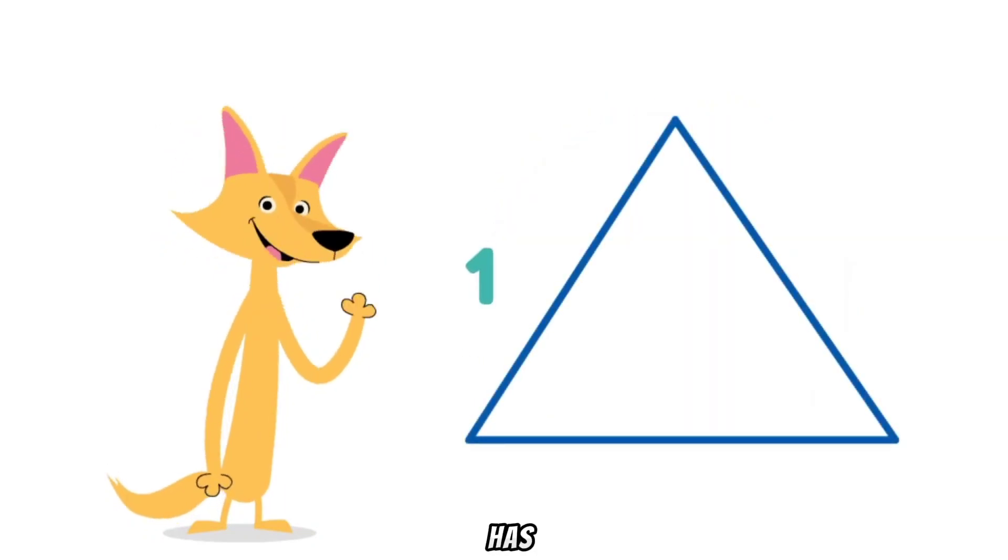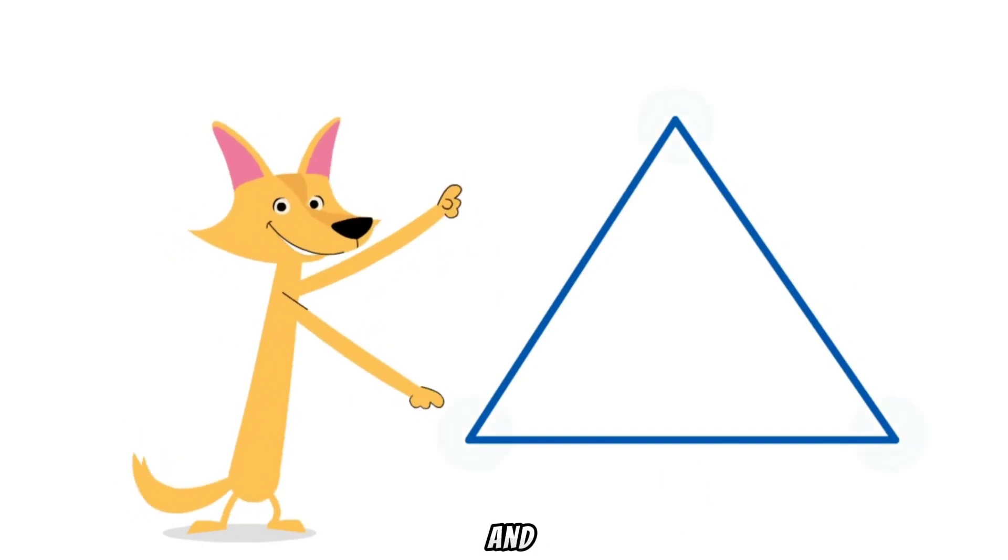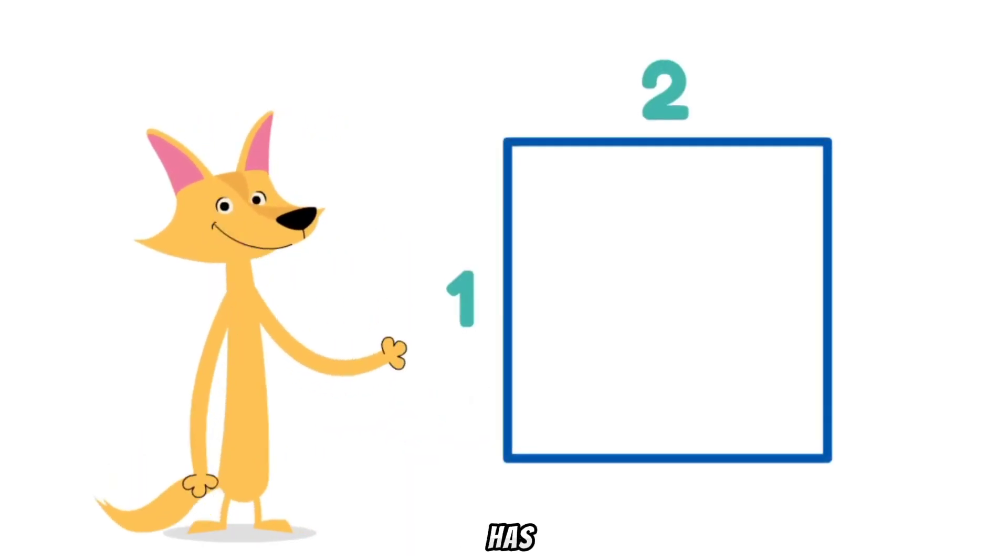A triangle has three sides and three corners. A square has four equal sides and four corners.